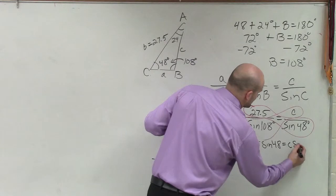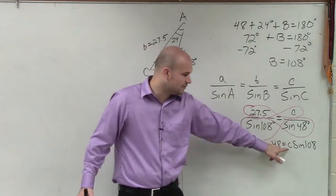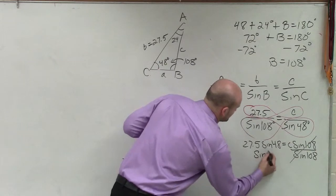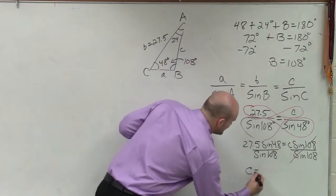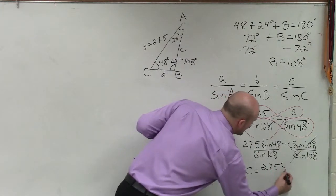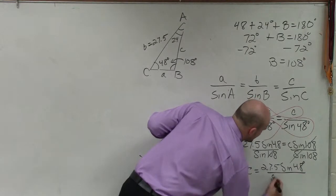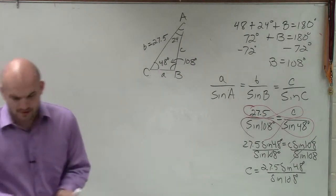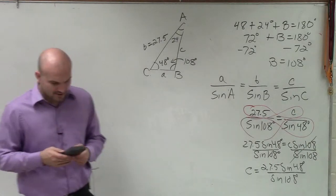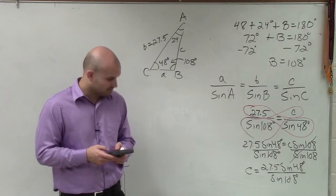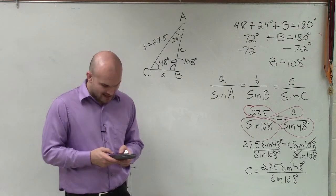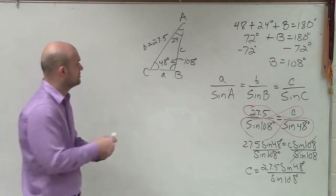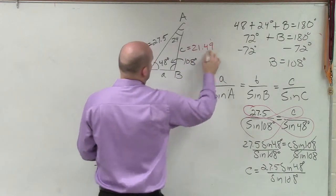So we multiply cross, so that's 27.5 times the sine of 48 equals C times the sine of 108. Well, again, we're trying to solve for our variable C, so I'll divide by sine of 108. So therefore, I can say C equals 27.5 times the sine of 48 degrees all over the sine of 108 degrees. Does everybody see what I did there? Okay, so now to solve this, or to find actually our value of C, I'm simply just going to take 27.5, multiply it by the sine of 48, and divide that by the sine of 108. And what you guys will get is 21.49 as you round it. So C equals 21.49.